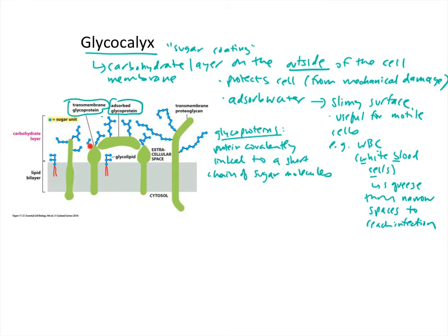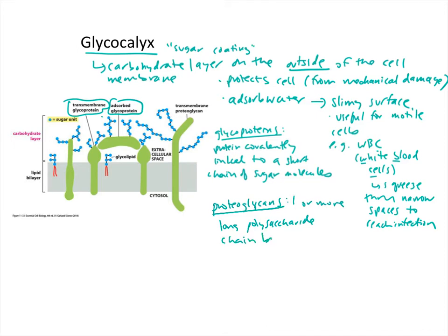Glycoproteins are proteins covalently linked to a short chain of sugars — those little blue stop-sign-looking shapes in the figure are each a sugar molecule, attached at one or multiple locations to these green protein blobs. A second part of the glycocalyx is the proteoglycans, which have one or more long polysaccharide chains bonded to the protein.